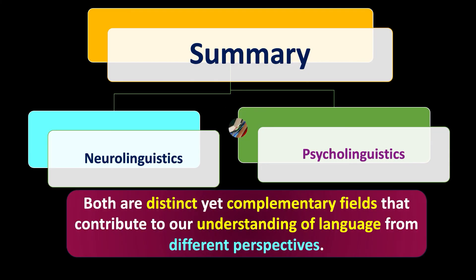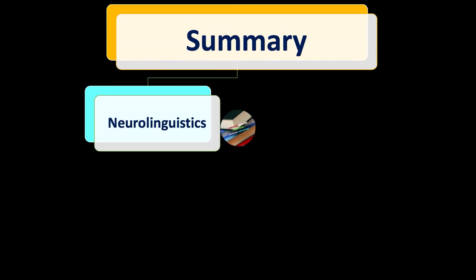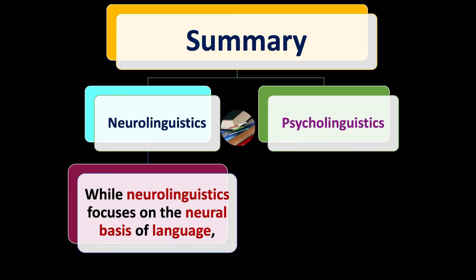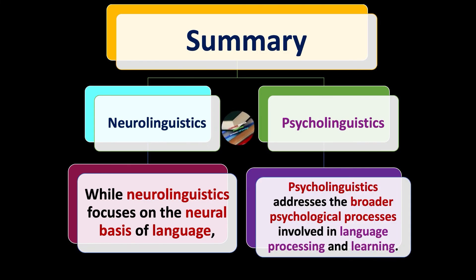Both are distinct yet complementary fields that contribute to our understanding of language from different perspectives. While neurolinguistics focuses on the neural basis of language — that is, brain mechanisms and their connection to language — psycholinguistics addresses the broader psychological processes involved in language processing and learning.